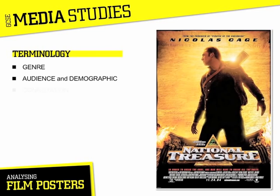Connotation is one of the most important terms in media studies and refers to what words, images and colours suggest or make the audience think about. Its sister term is denotation, which refers to meaning at a much more basic level. This poster of National Treasure denotes a pyramid shape near the title of the film. However, the connotation of this is exotic locations, ancient artefacts and treasure, because this is what the audience thinks about when we see a pyramid.